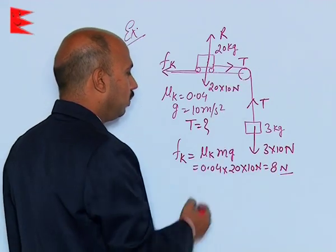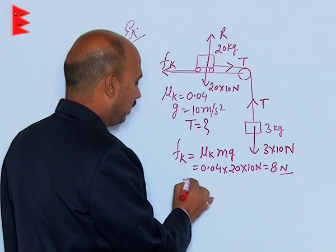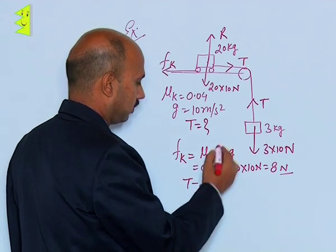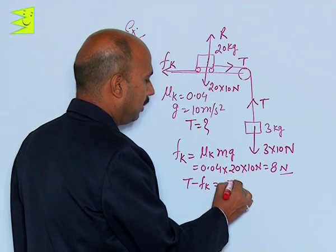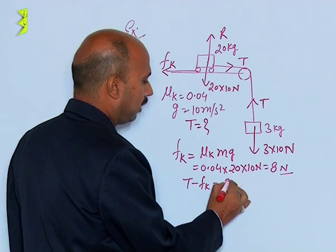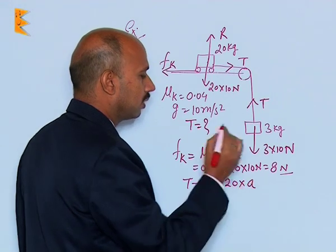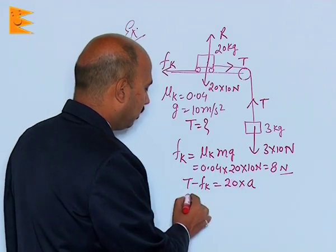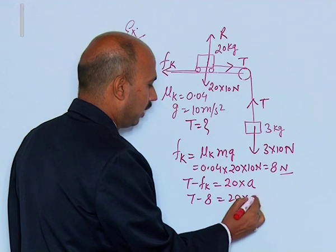So we can write equation here. T minus Fk is equal to m into a, that means we can write 20 into a and that is your T minus 8 is equal to 20 into a.